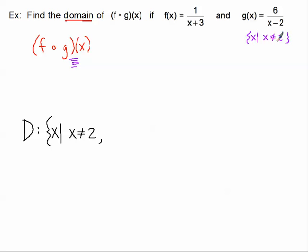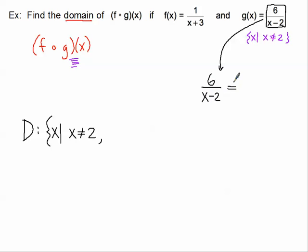Now that we're finished with that, we're going to take this g of x function and plug it into f of x. We need to know what number cannot be plugged into f of x. Looking at f of x, x can't be negative 3, because then we'd have a 0 in the denominator. So we need to make sure that the entire g of x function does not equal negative 3. We need to figure out what x value would make this happen, because that x value also has to be restricted from our domain.